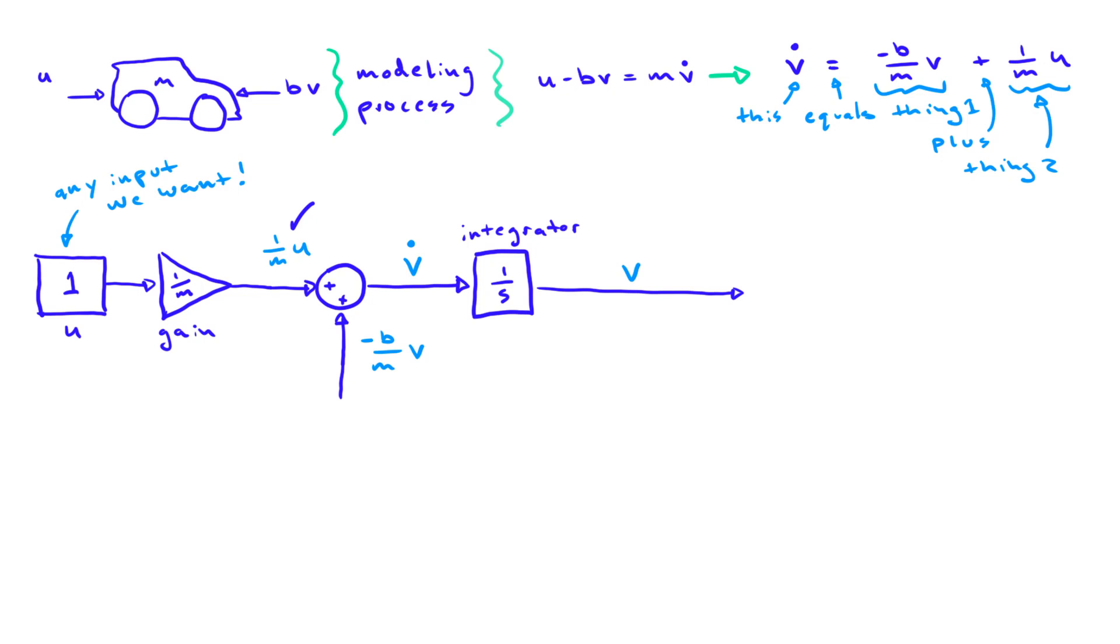Since this is the output of the system, we also probably want to send this signal to the output via a sink block. It can be either a scope or a to workspace block, but we'll choose the latter since we want to analyze our data at a later time.